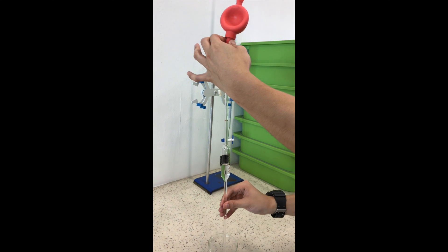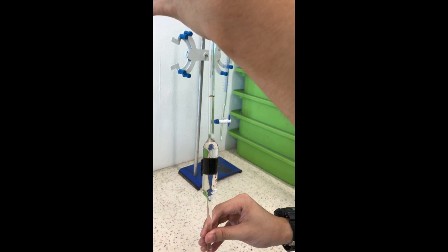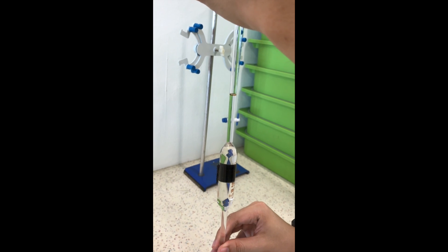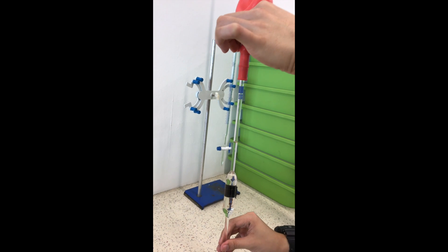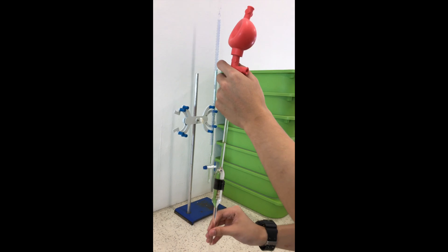Now, once the level of the liquid reaches the line, which stands for 25.0, we then remove the whole pipette from the solution and transfer this into a conical flask.